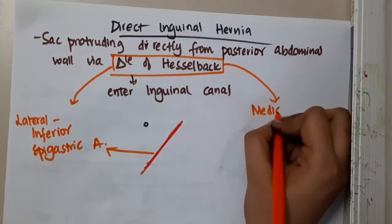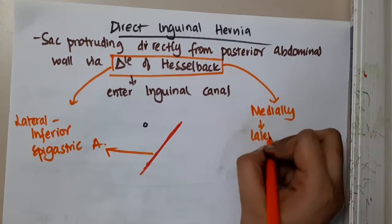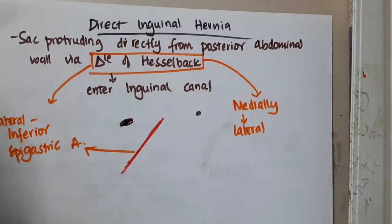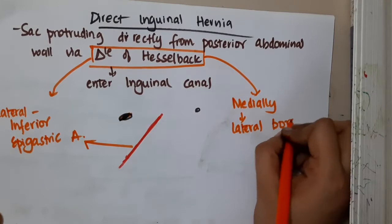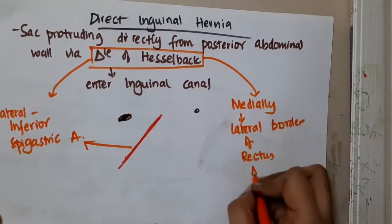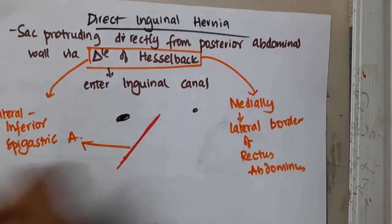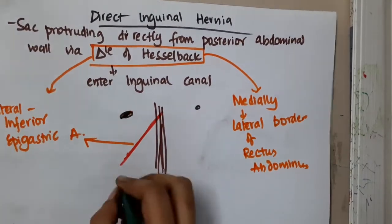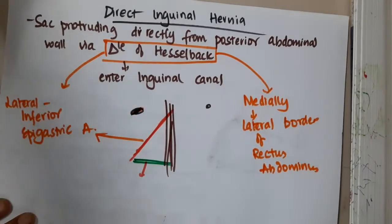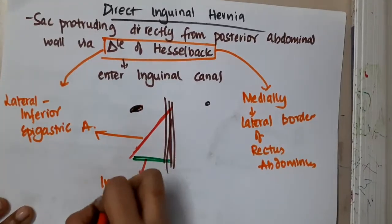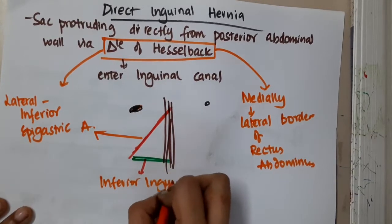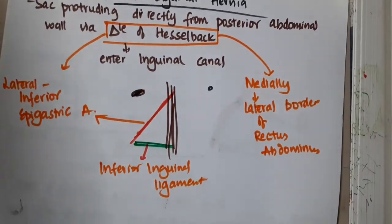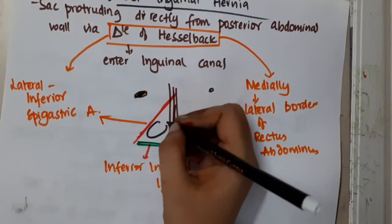Medially, you will see the lateral border of the rectus abdominis. Inferiorly, it is made up of the inguinal ligament. So if there is a sac which is coming out from here, through this triangle, it is called direct inguinal hernia.